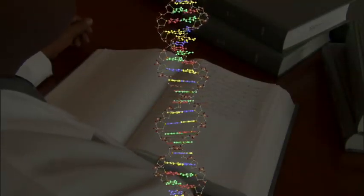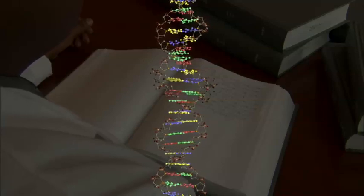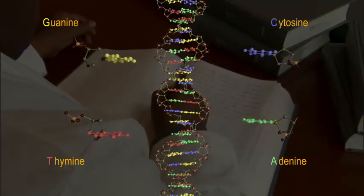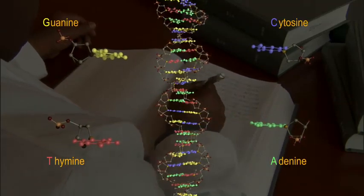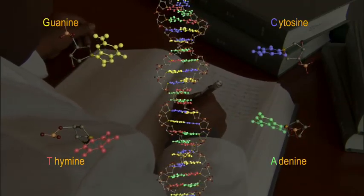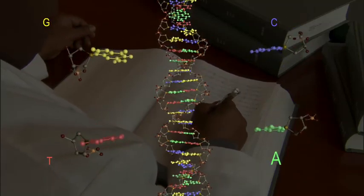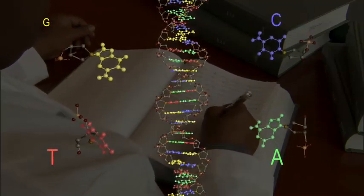These steps of the DNA ladder are composed of just four different molecules: adenine, thymine, cytosine, and guanine. And it is common to refer to them by their initials, A, T, C, G.